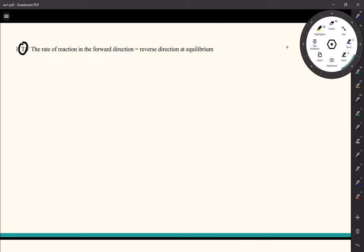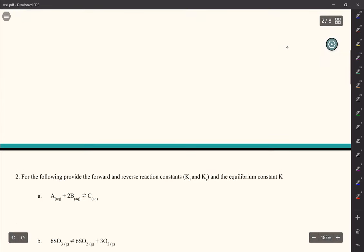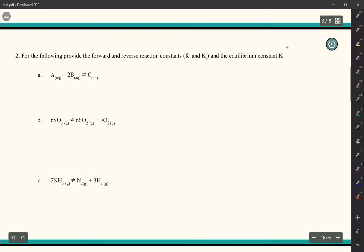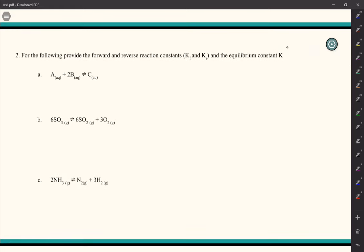Remember that the concentration of products and reactants do not change during equilibrium. So for the second question, for the following provide the forward and reverse reaction constants, K forward and K reverse, and the equilibrium constant K. So let's start out with doing a really simple equilibrium. So I'm going to say 1x becomes 1y.